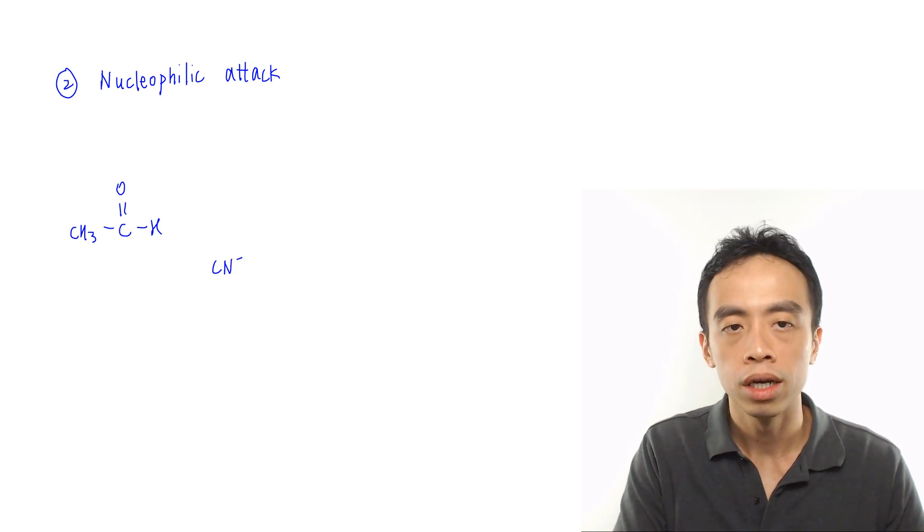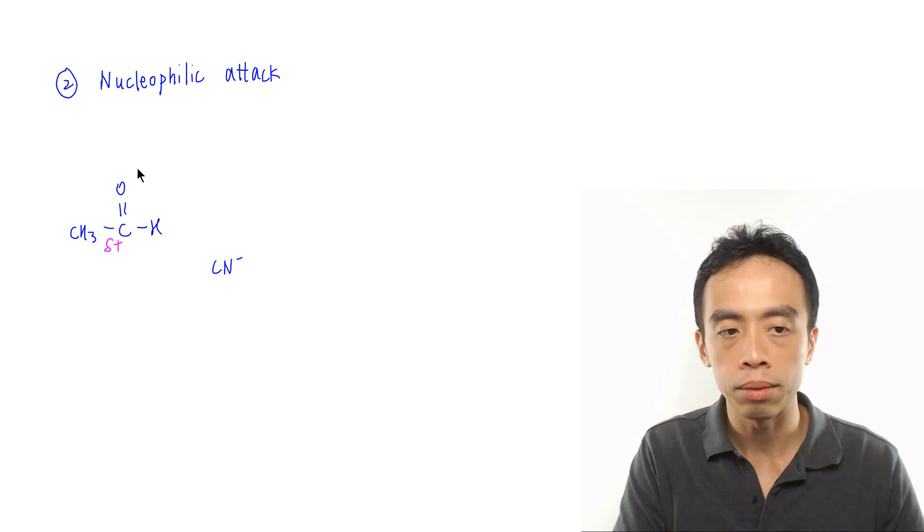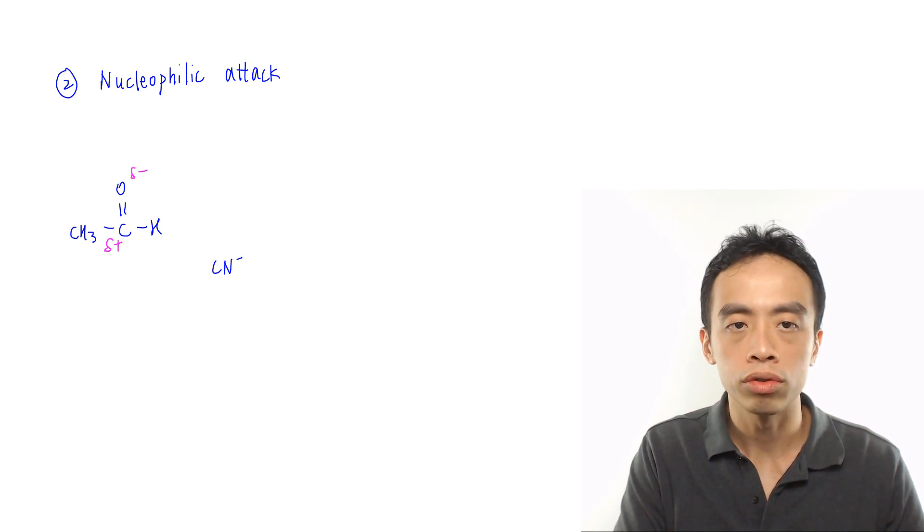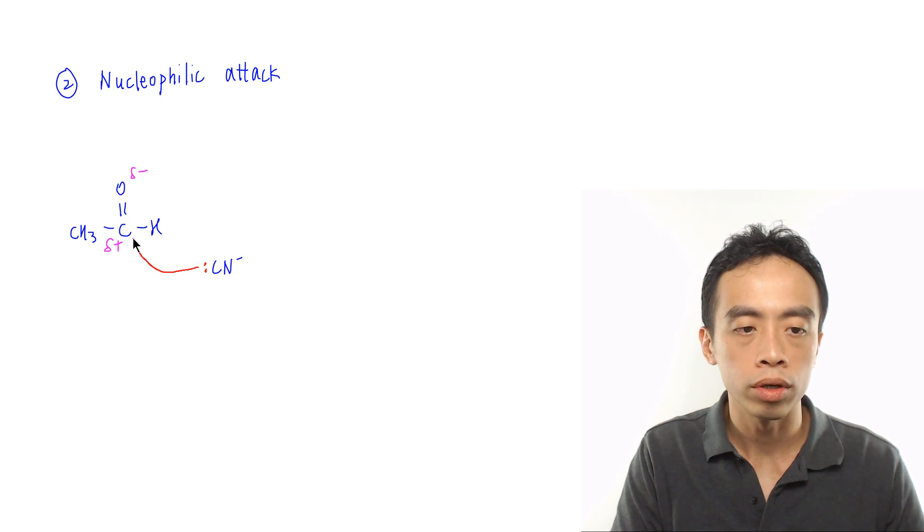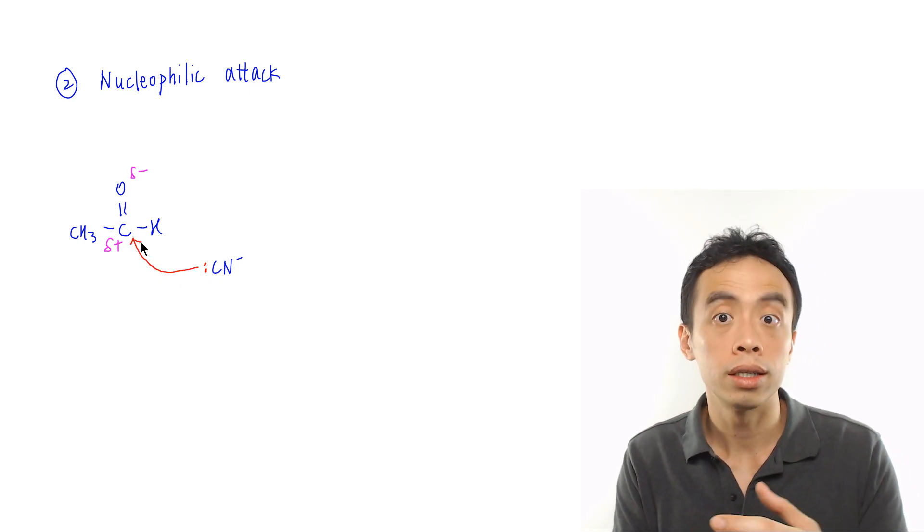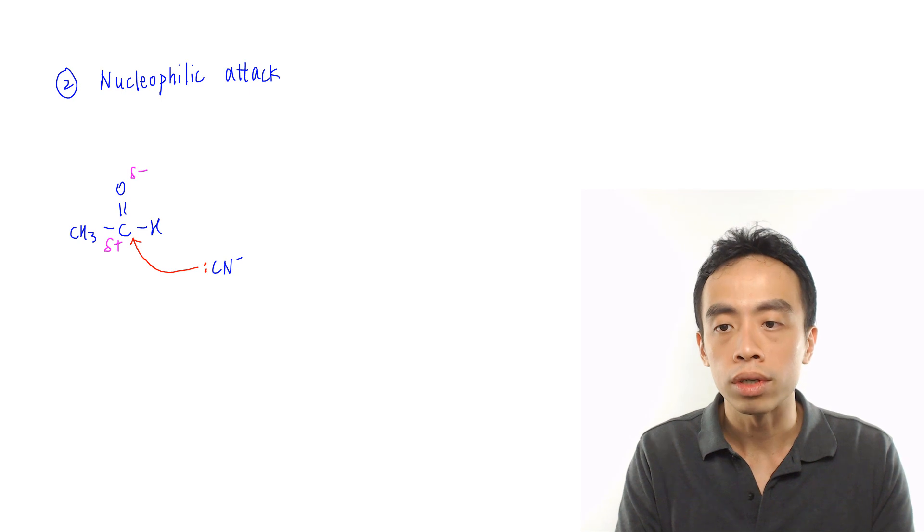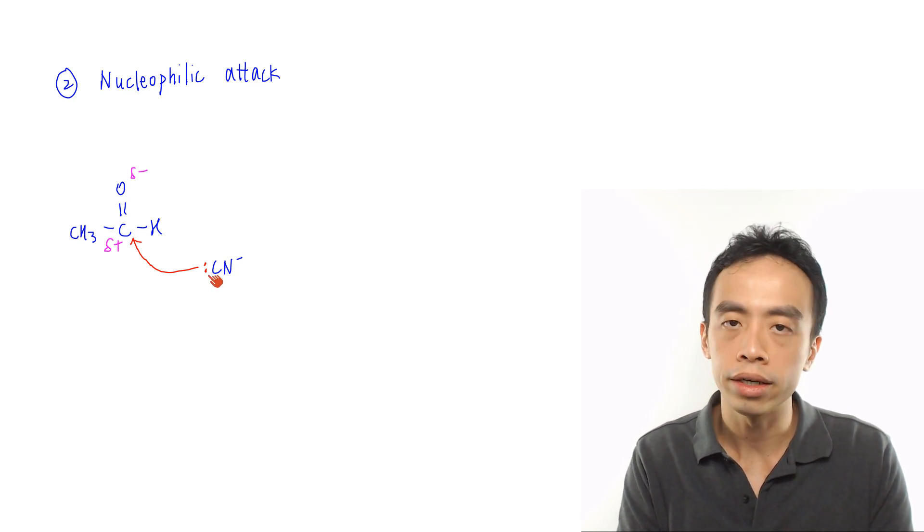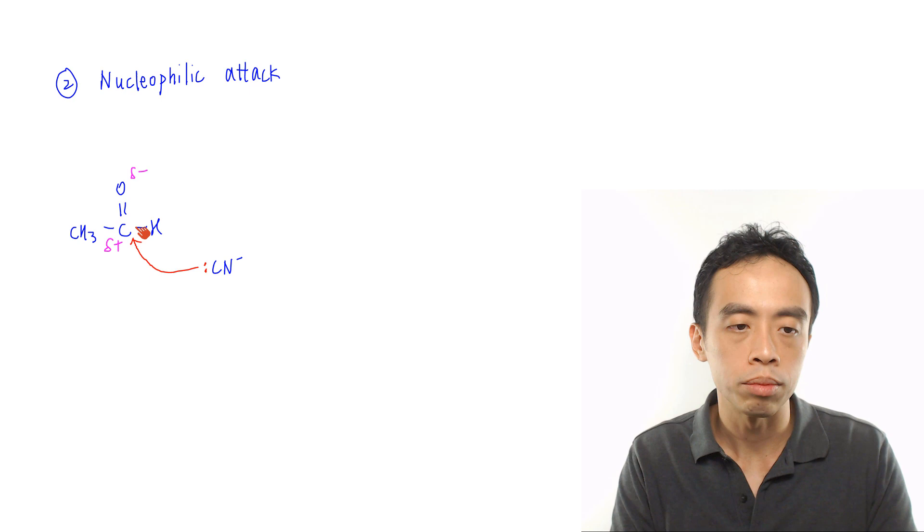Then CN⁻ will come in. CN⁻ will attack the carbon, which has a partial positive charge. I can put the delta positive charge on carbon, partial minus charge on oxygen. We draw a lone pair on carbon. We draw an arrow pointing to carbon because later we will form a carbon-carbon bond.